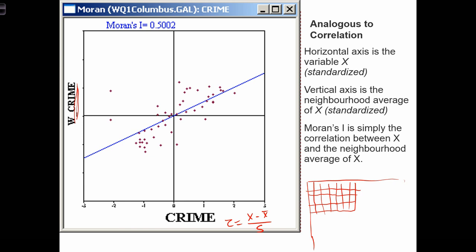The vertical axis is the neighborhood average of crime. So let's assume that this is one of our locations that we've measured crime at. We can plot this value of crime on the x-axis. And then we are going to look at the neighborhood of that location. Say we're using the Queen's case. And we're going to calculate the average of all the crime in the neighborhoods around this target. And that is going to be our wx variable, our w crime. So we have crime versus the neighborhood average of crime at each location.